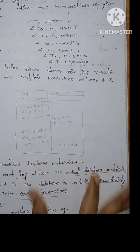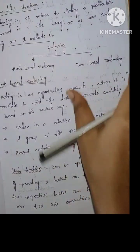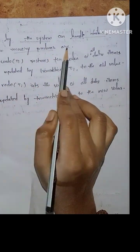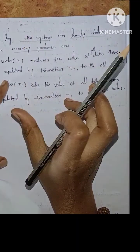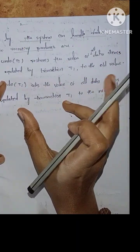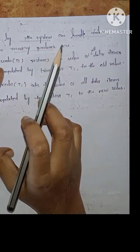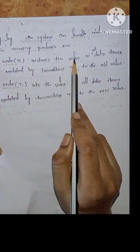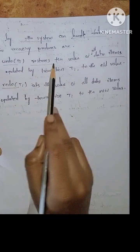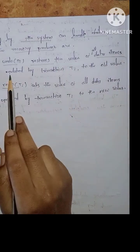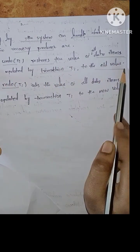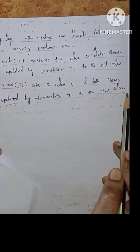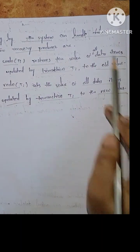The log system can handle failure through two recovery procedures: undo and redo. Undo restores the value of all data items updated by transaction Ti to the old value. Redo sets the value of all data items updated by transaction Ti to the new value.